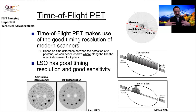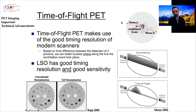Time-of-flight PET actually happened even before the major new push towards it. But some of those early scintillators were not very sensitive, so people set them aside and moved towards BGO. BGO doesn't have the timing characteristics that allow time-of-flight PET, but LSO does.